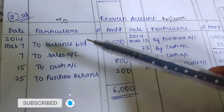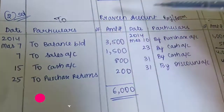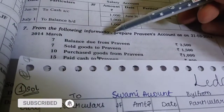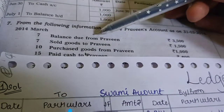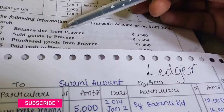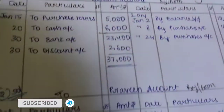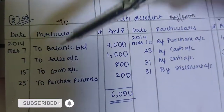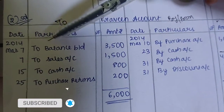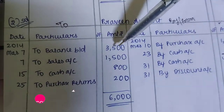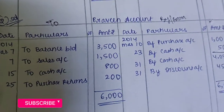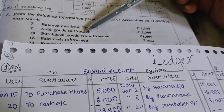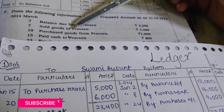This shortcut works in reverse for the first transaction. Here they gave us 'from' before the name, which normally means credit side, but only for the first transaction the balance amount goes to the opposite side. So balance brought down 3500 goes to the debit side.